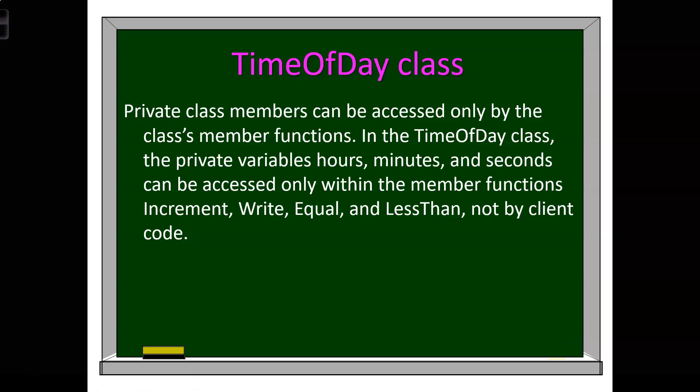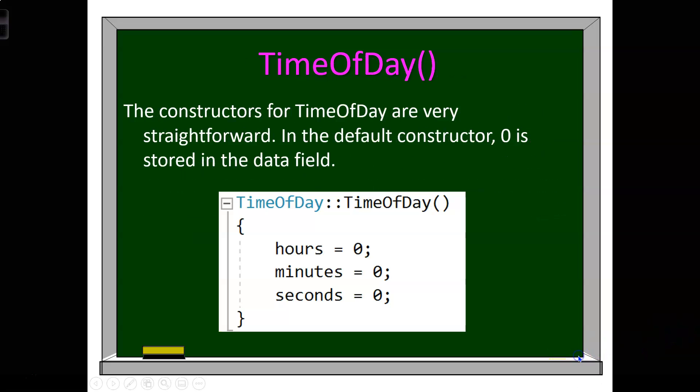Private class members can be accessed only by the class member functions. In the TimeOfDay class, the private variables hours, minutes, and seconds can be accessed only within the member functions increment, write, equal, and less than — not by client code. Client code is any code that's outside of the class. We consider this a process known as data hiding, so you can't accidentally change those variables somewhere else in the program — which was a common cause of bugs in the past.